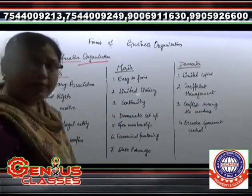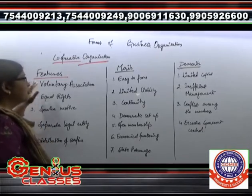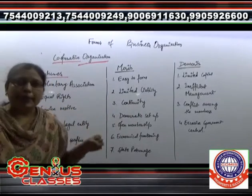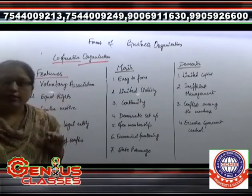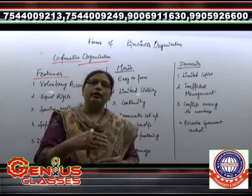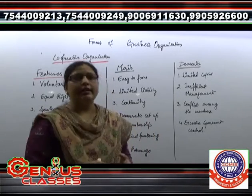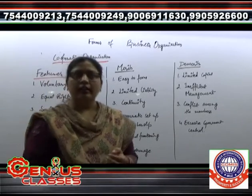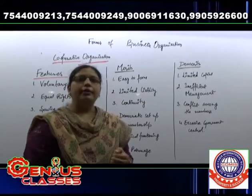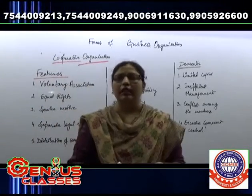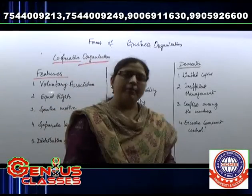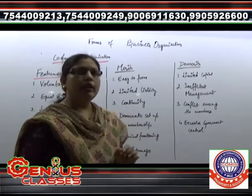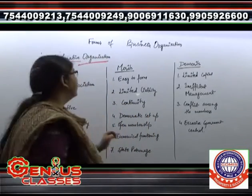Come to the features of cooperative organizations. First feature is voluntary association — it is a voluntary association of people who form the organization. Yahan pe voluntary means khud — aapko lagta hai ki mera interest hai, to go and join the group. So yahan pe voluntary association.